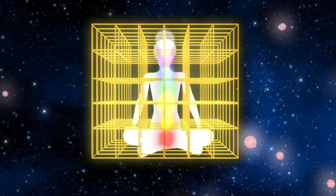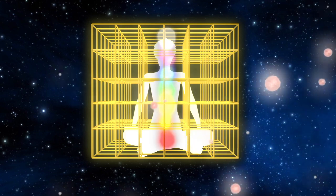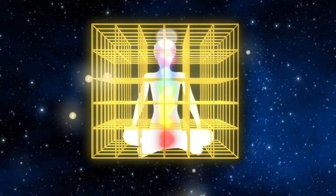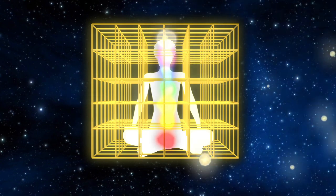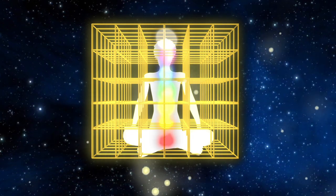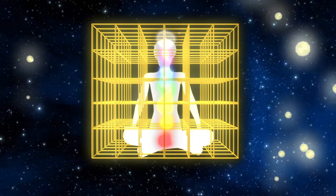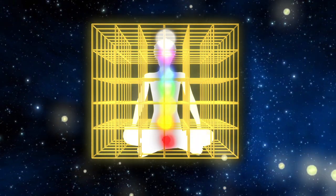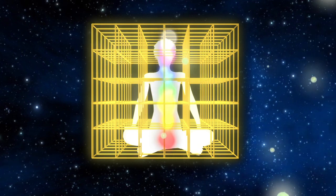There is an etheric net around the earth plane that can potentially take you into the lower vibrations or astral plane of the earth, creating and perpetuating negative thoughts and feelings and an imbalance within the lower body.